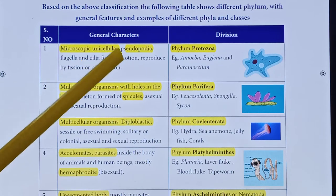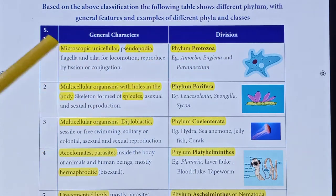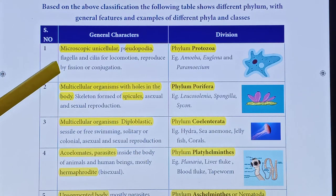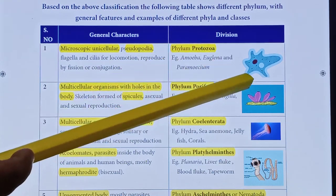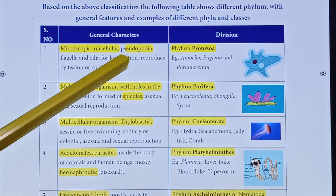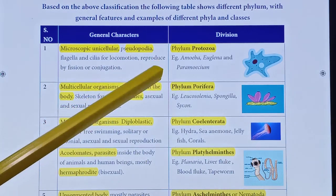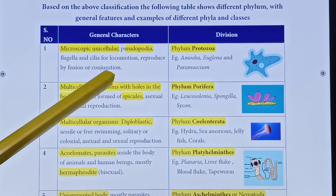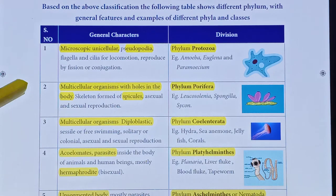Based on the above classification, the following table shows different phylums with general features and examples. Unicellular animals belong to Phylum Protozoa. They are microscopic unicellular organisms with special characteristics such as pseudopodia, irregular shape, and flagella and cilia for locomotion. Reproduction is by conjugation. Examples are amoeba, euglena, and paramecium.